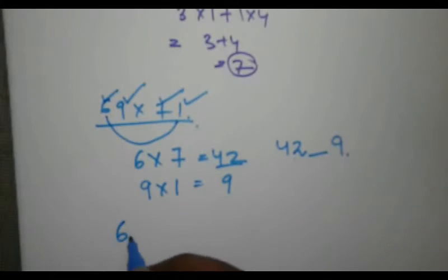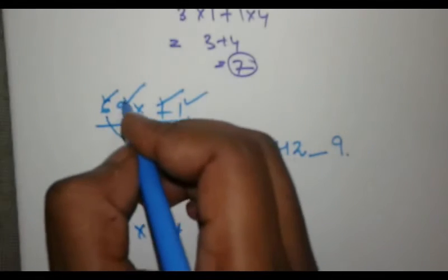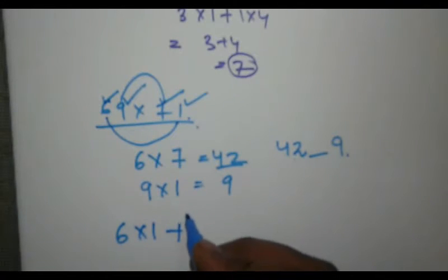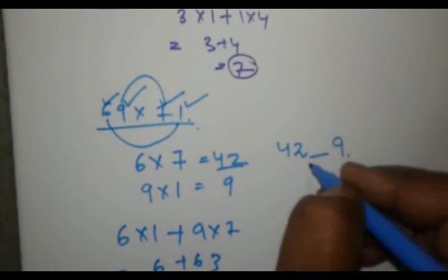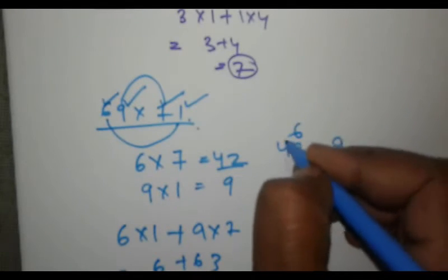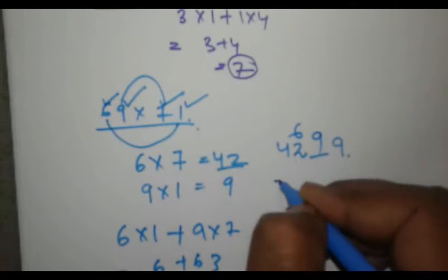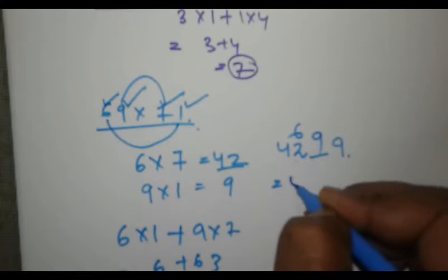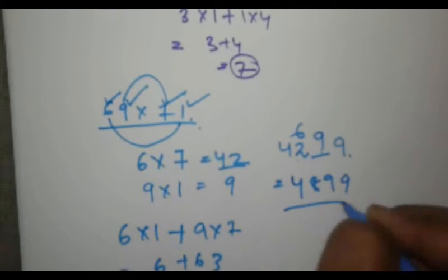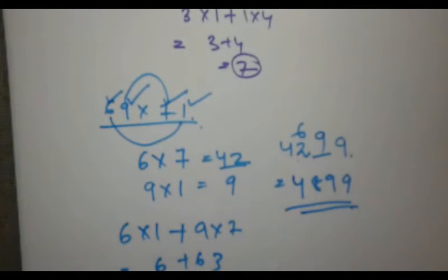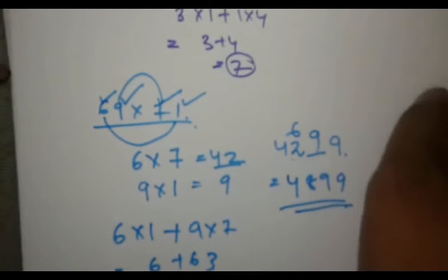Next, we multiply 6 into 1 plus 9 into 7. That gives us 6 plus 63, which is equal to 69. We write 6 in the tens position and carry 9, so the final answer is 4899.